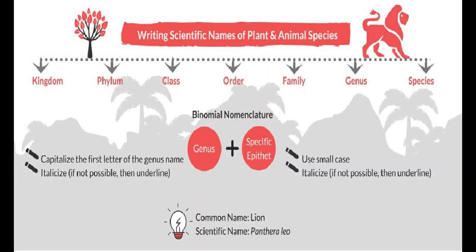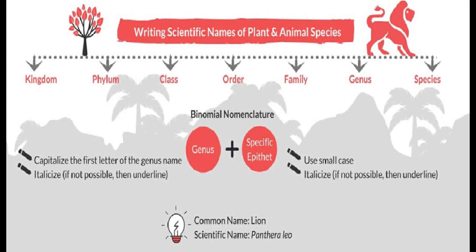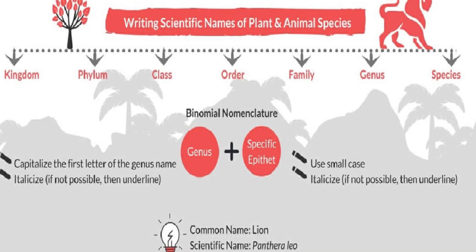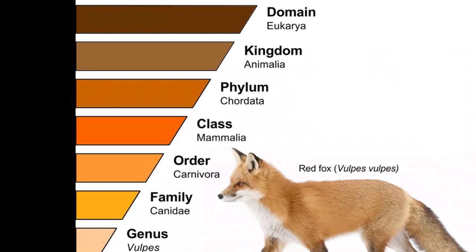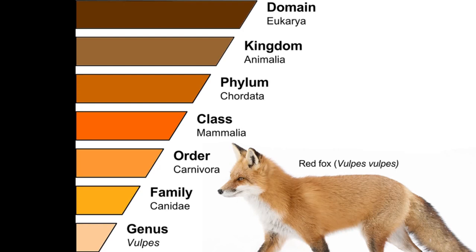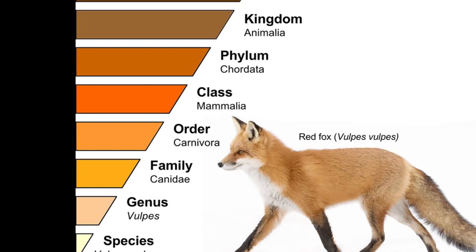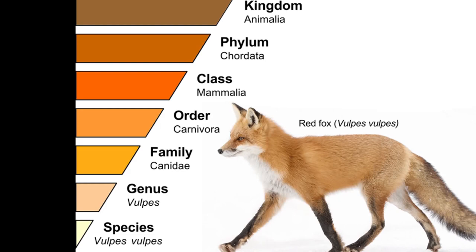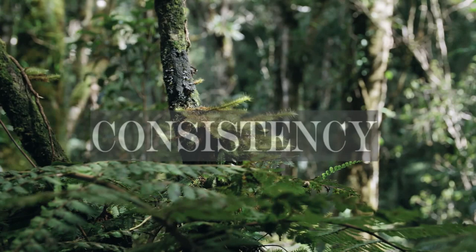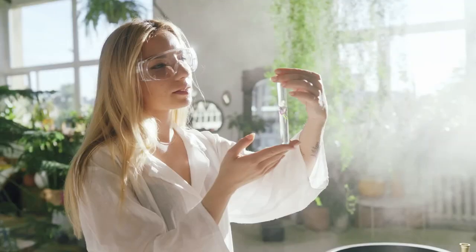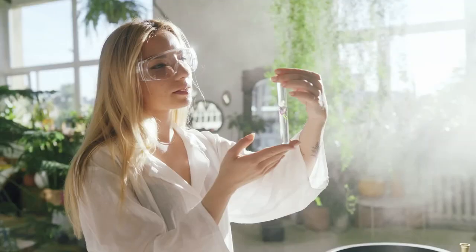Scientific names are chosen carefully to reflect certain characteristics or relationships of the organism. Binomial nomenclature is part of a broader hierarchical system of biological classification, which includes categories like kingdom, phylum, class, order, family, genus, and species. The use of standardized naming conventions, as established by the International Code of Nomenclature, ensures that scientific names remain consistent and can be understood worldwide. This consistency is essential for scientific communication and research.